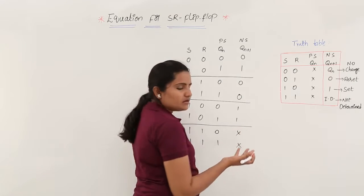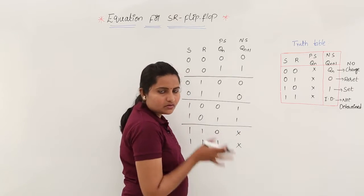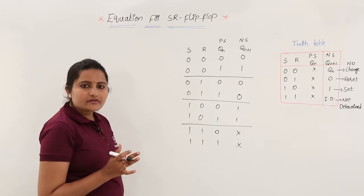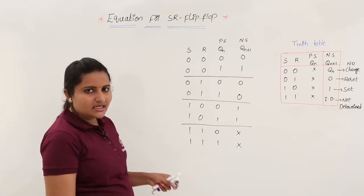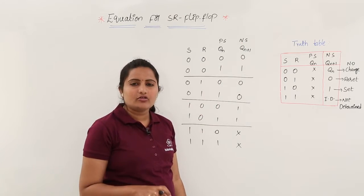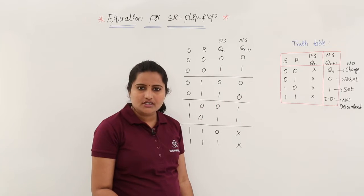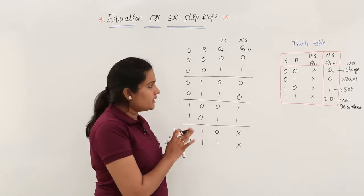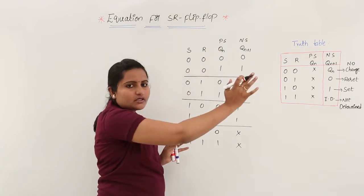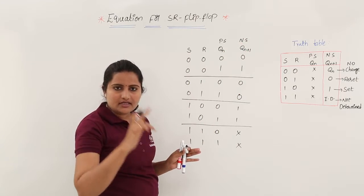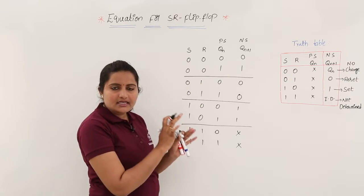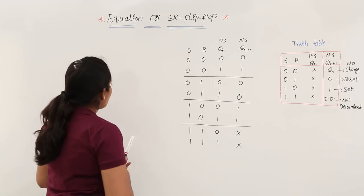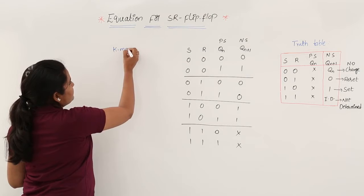Indeterminate state means we are just neglecting this state and marking it as don't care. Now it is time to take a K-map to get the expression. We need the K-map for the next state QN+1, because for any sequential circuit, the next state is the required output. We need to consider present inputs and present state as inputs to get this next state. Taking S, R, and QN as inputs, we are defining QN+1.